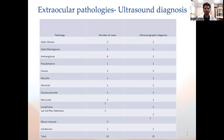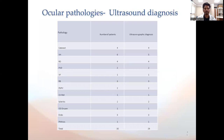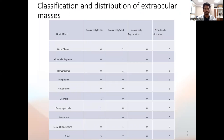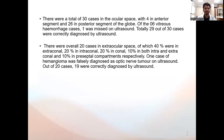In the tabulated form, extraocular pathologies comprised about 20 cases, out of which 19 were diagnosed accurately on ultrasound. There were around 30 patients with ocular pathologies, out of which 29 were diagnosed correctly. The classification of extraocular masses showed three cases acoustically cystic, seven acoustically solid, three acoustically infiltrative and none acoustically angiomatous. There were a total of 30 cases in the ocular space with four in the anterior segment and 26 in the posterior segment. Of the six vitreous hemorrhage cases, one was missed on ultrasound and 29 out of 30 cases were correctly diagnosed. The 20 extraocular space cases comprised 40 percent extraconal, 20 percent intraconal, 20 percent conal, 10 percent both intra- and extraconal, and 10 percent preseptal compartments. One case of hemangioma was falsely diagnosed as an optic nerve tumor on ultrasound.